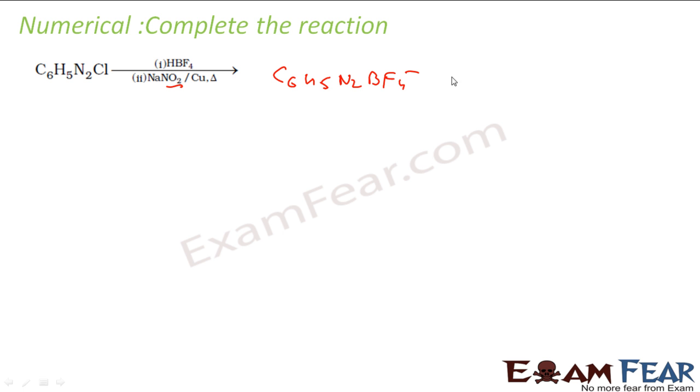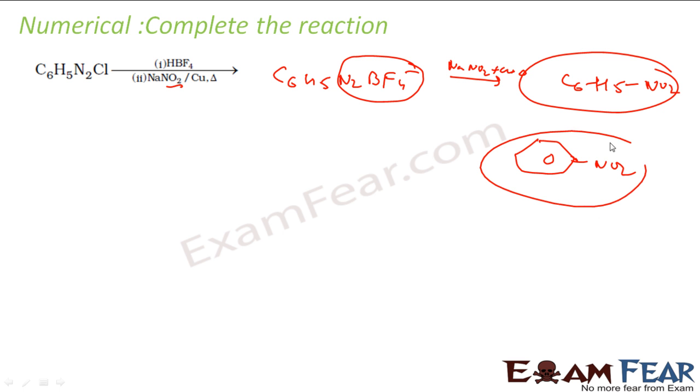Now when you react with NaNO2 and copper and some heat, what will happen is this whole thing will be converted to NO2. So you'll get C6H5NO2, that is nitrobenzene. Obviously nitrogen gas will come out and you get NaBF4.